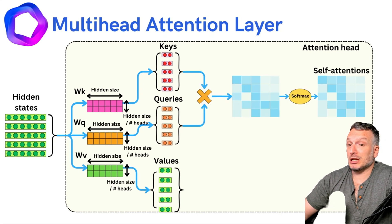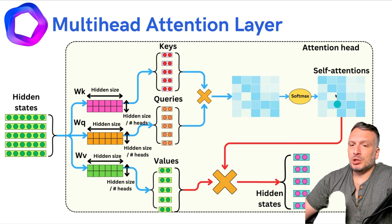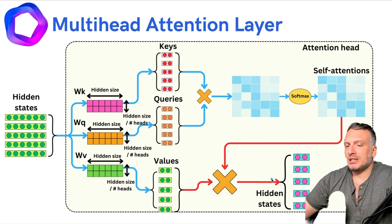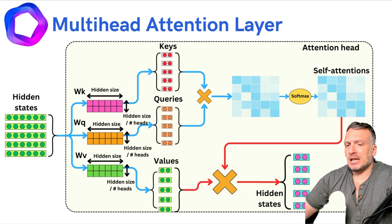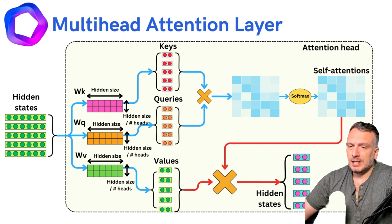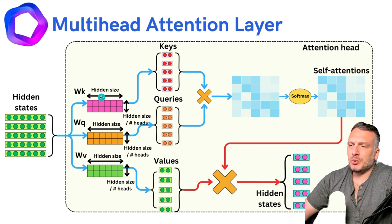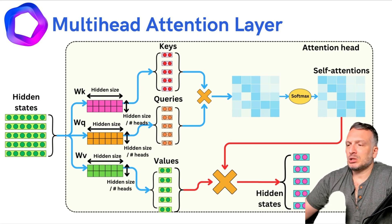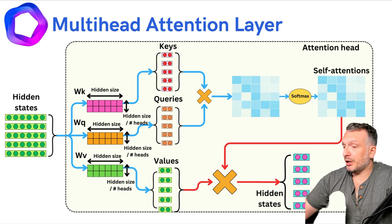The size of the self-attentions is preserved, but by doing the dot product between the self-attentions and the values, we obtain hidden states that have a lower dimension. Those resulting hidden states can be concatenated with the hidden states of the other attention heads, then passed through the output linear layer. It is important to have a hidden size that can be divided by the number of heads — if you have a hidden size of 10 but three heads, this should throw an error.